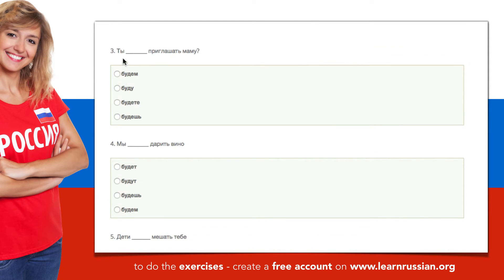The next one. Ты — you. Приглашать — to invite. Маму — your mom. It's a question. The options are: будем, буду, будете, будешь. Ты будешь приглашать маму? Are you going to invite your mom?